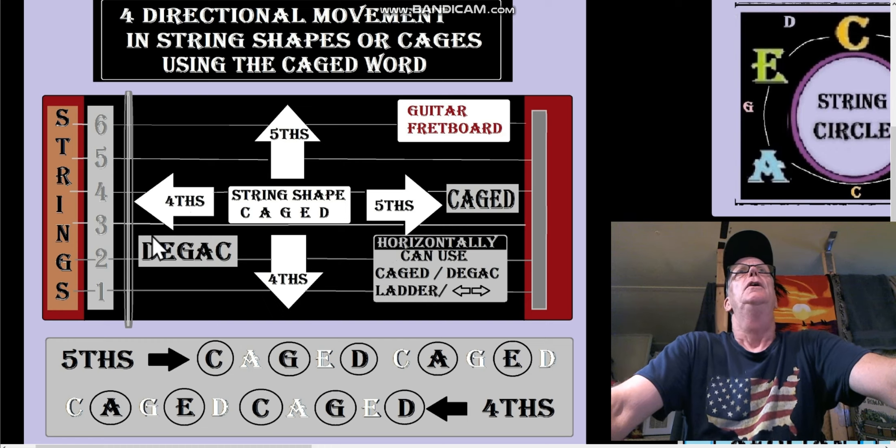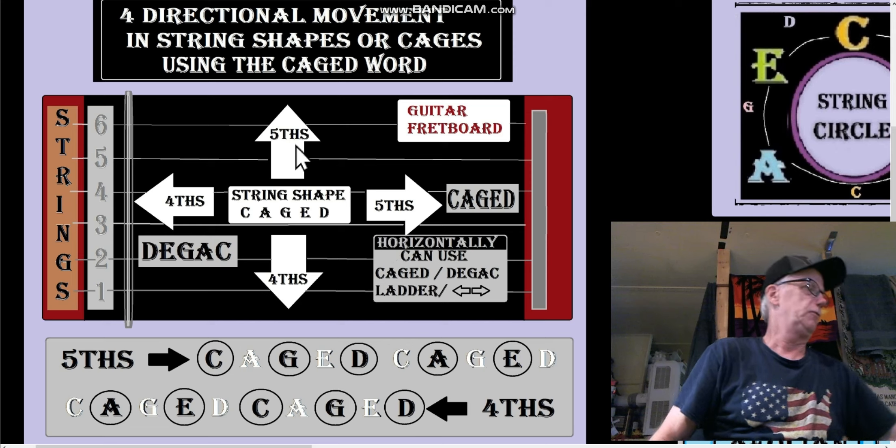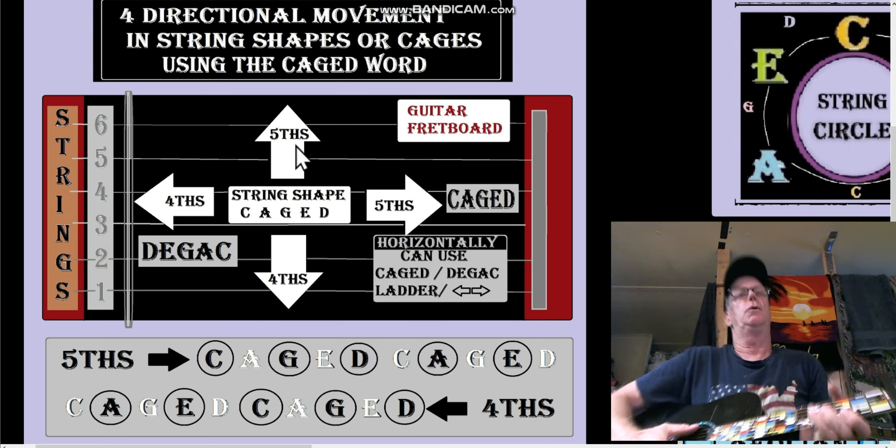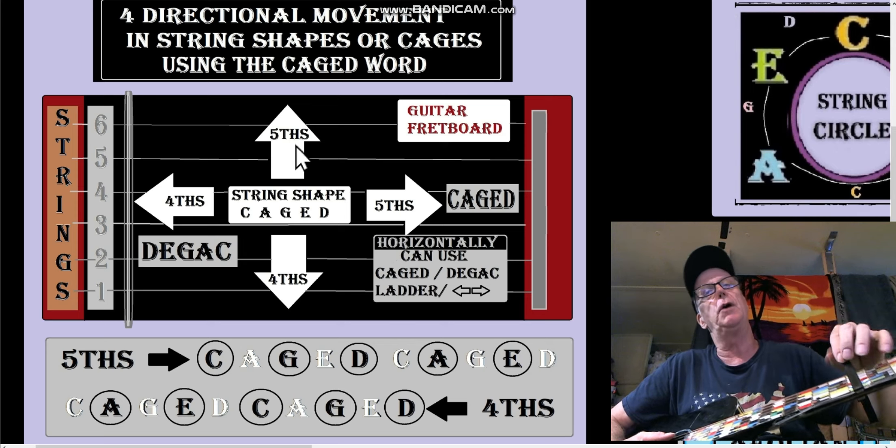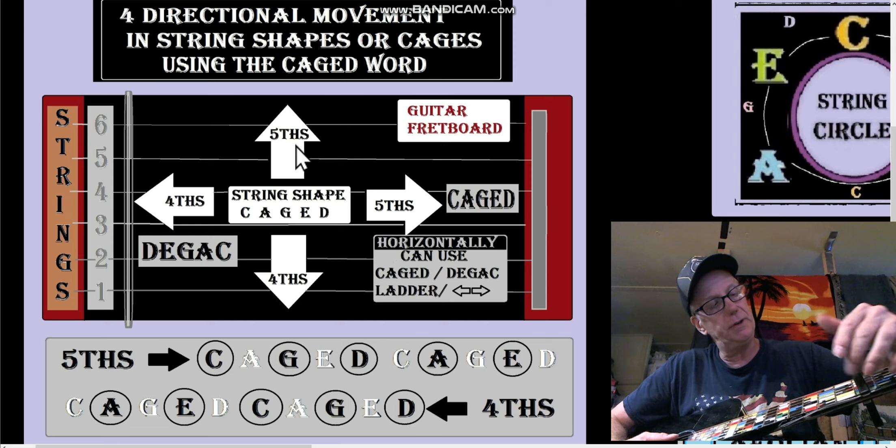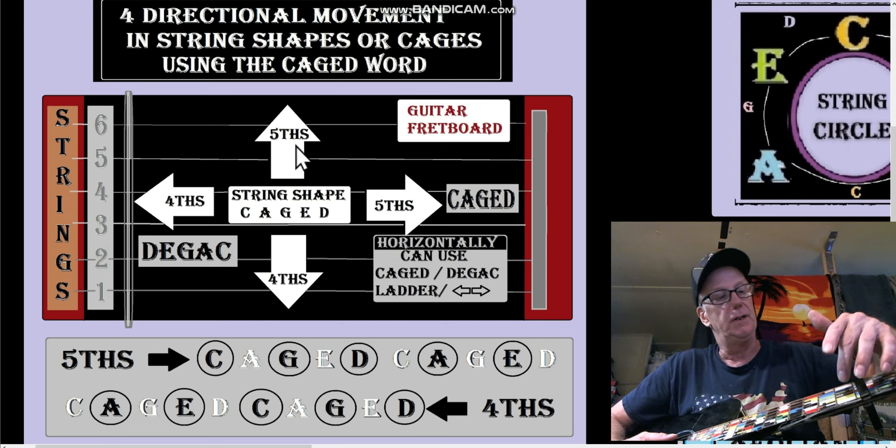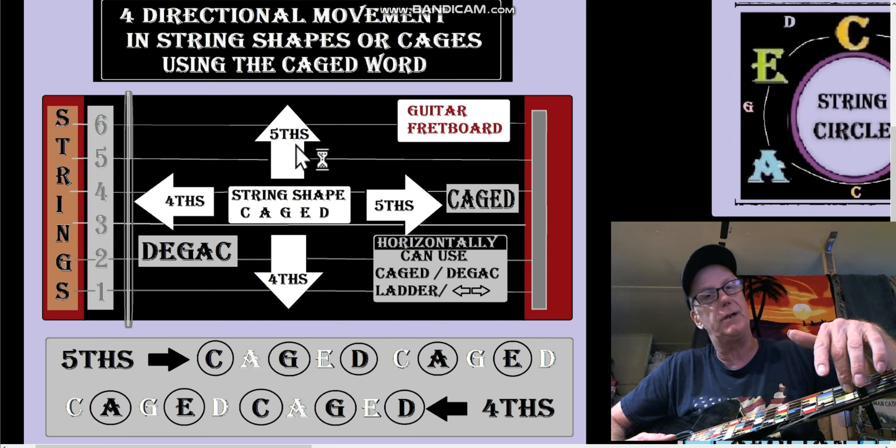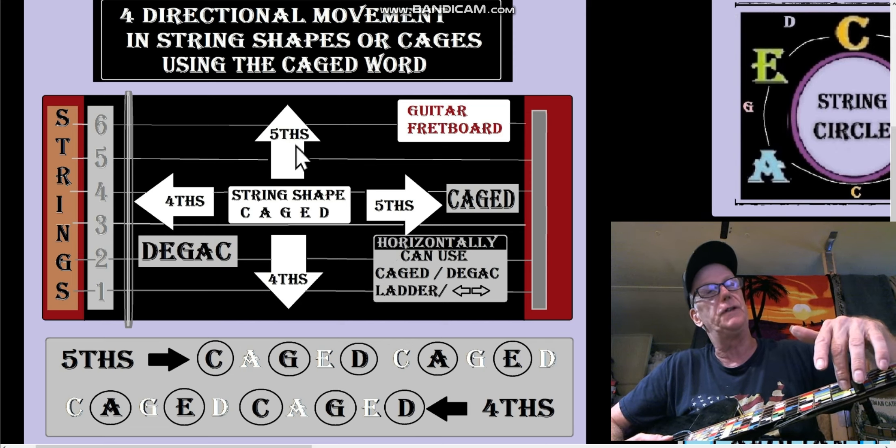Going up the strings you go up in fifths, but if you go up in the string notes on the tuning fret they go up in fourths and down in fifths. Now when you're going down from E to G that's really an augmented fifth, so from the B string to the G string that's an augmented fifth.